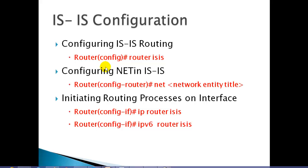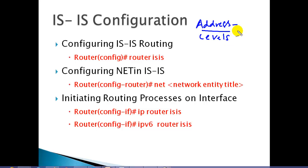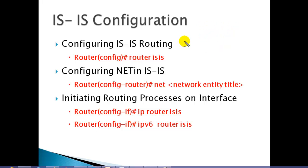Now, once you understand the different level types, the first thing we need to understand is the addressing part — how to configure the addressing inside IS-IS, the NSAP address — and then understanding the different levels. When configuring in multiple areas, we need to ensure that different levels are correct in order to have a proper exchange of routes. Once you understand this, we are ready to start our labs.